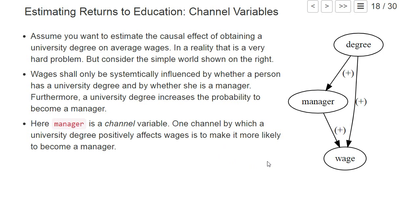In the quiz question, if you want to estimate the total effect of having the university degree on your wages, will you run the short regression where you don't add manager, or will you add manager as a control variable in your regression?